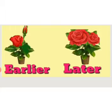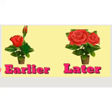Okay children, now see this picture. In this picture, you are going to see two flower pots. In one flower pot it has small flowers, and in the other it has big flowers. Now, small flowers are earlier and big flowers are later. When the flowers were in an early stage, they were small. And when the flowers became big, it was later. So you understood what is earlier and later.